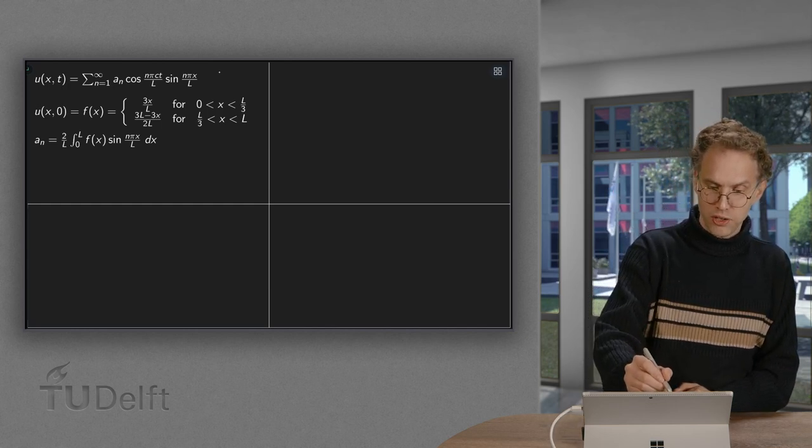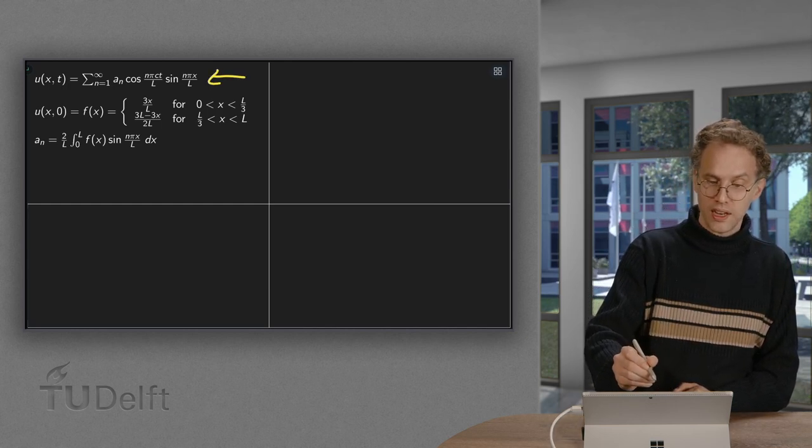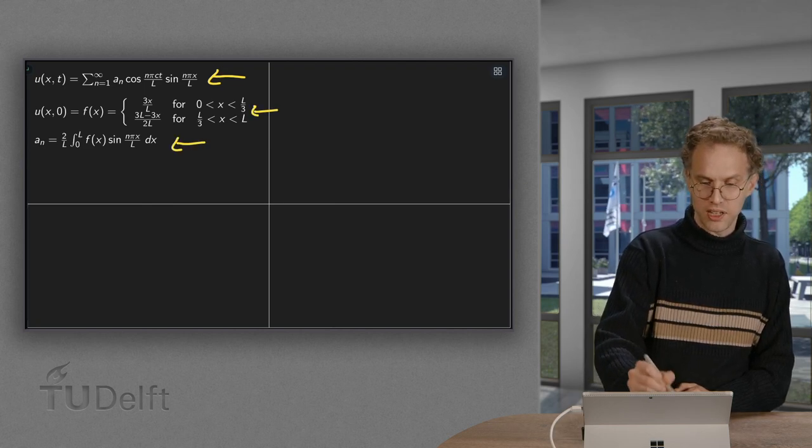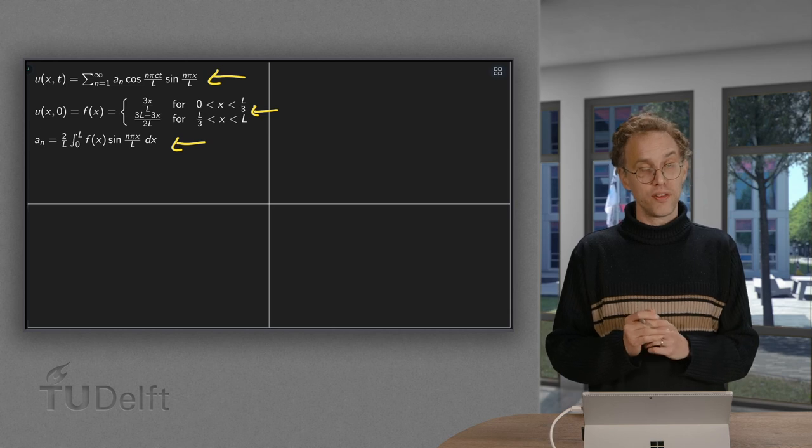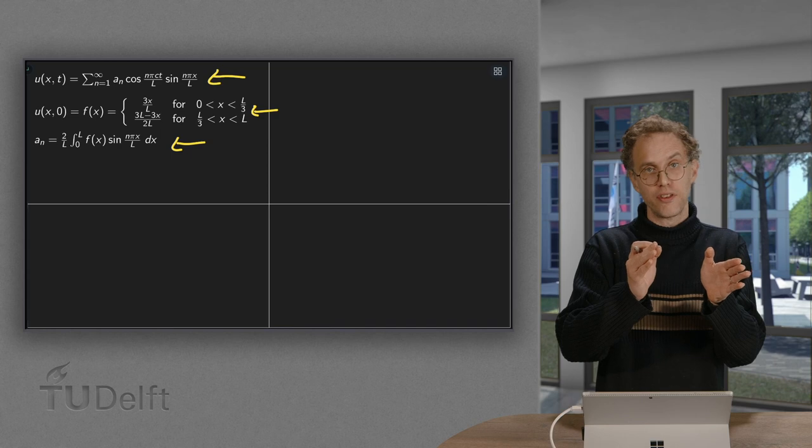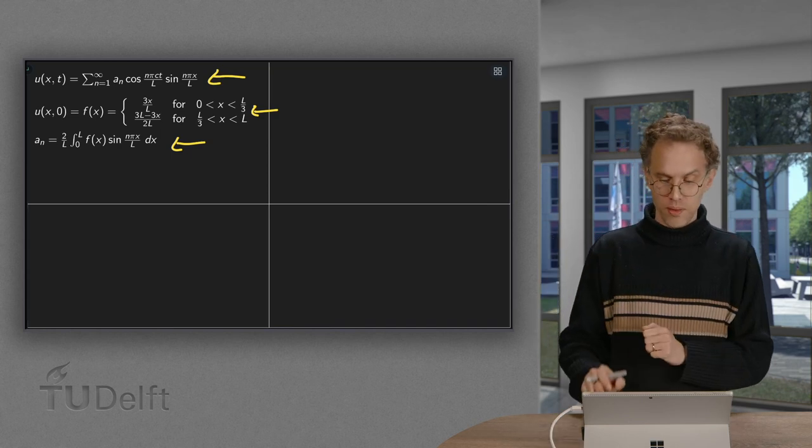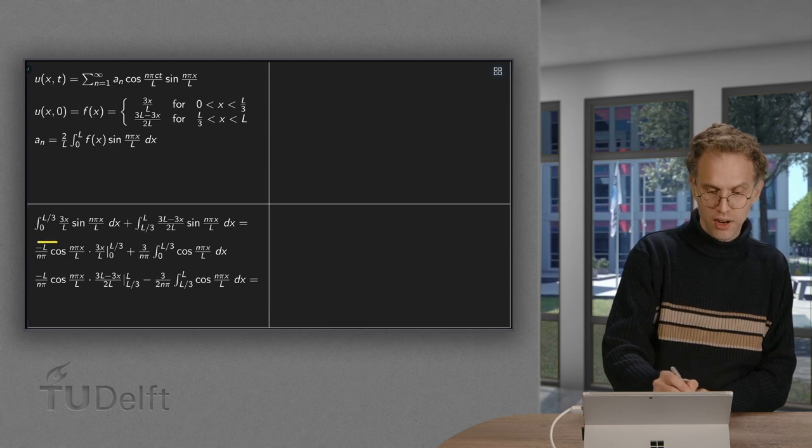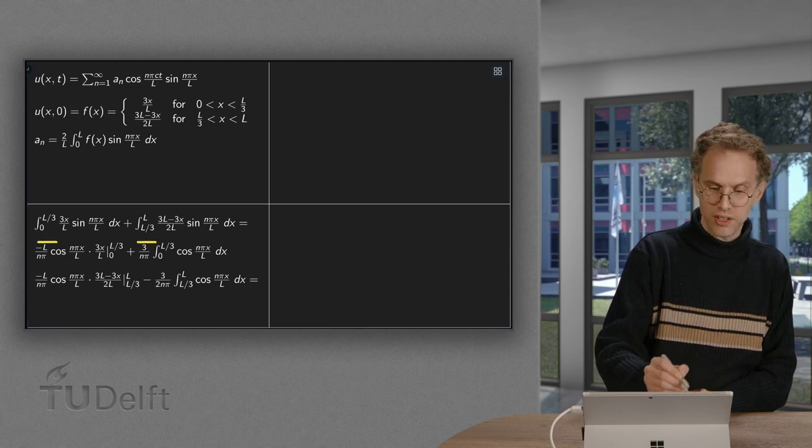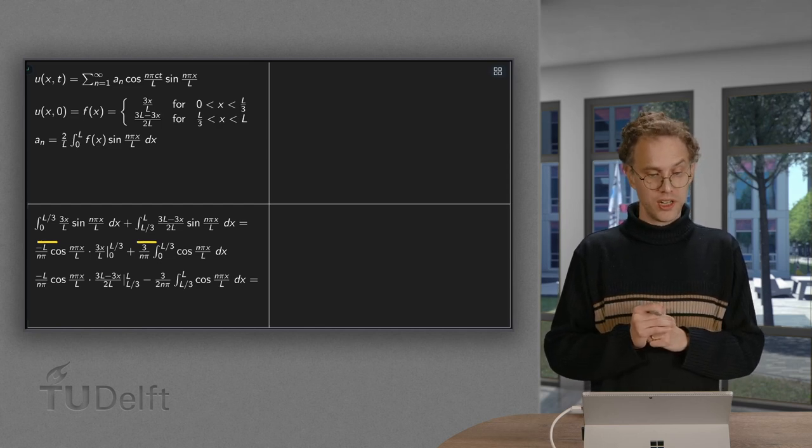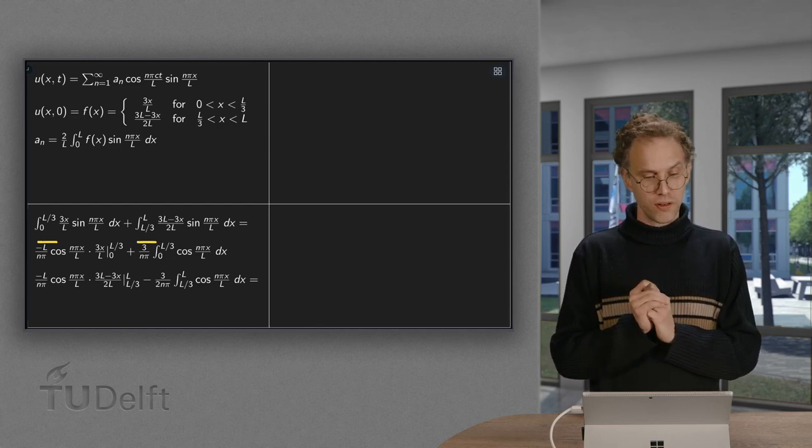And then we compute the an. So our final solution is given over here. The initial condition was given over here. And the an are given by this integral. Now we have a split prescription for f. It's different between 0 and L over 3 and L over 3 and L. So when we integrate, we integrate from 0 to L over 3, we integrate from L over 3 till L. A different function. For both we have to use integration by parts. First integral first.